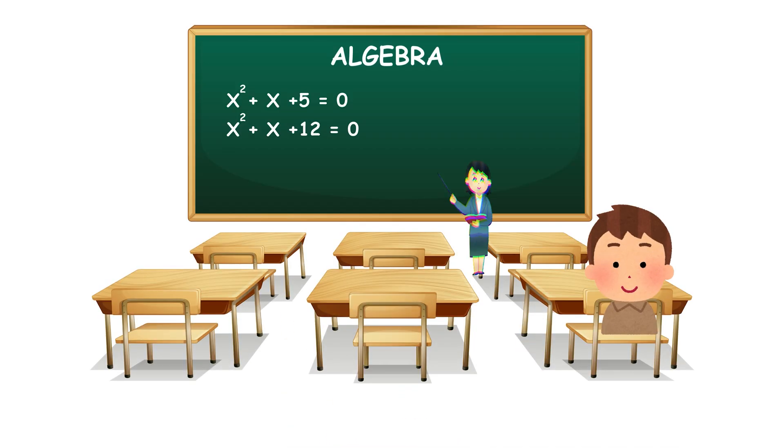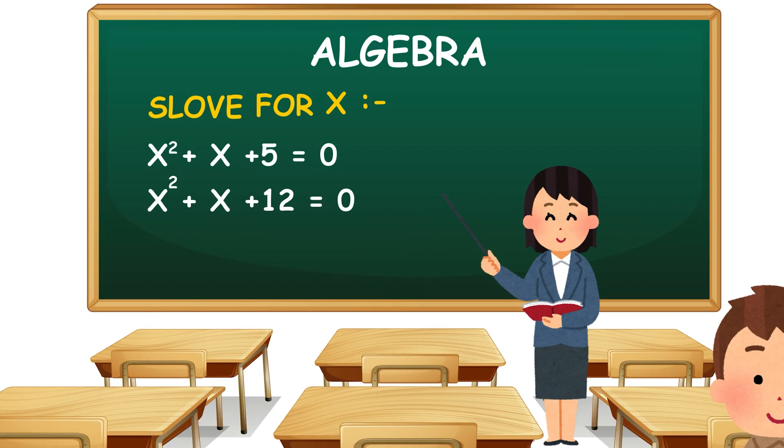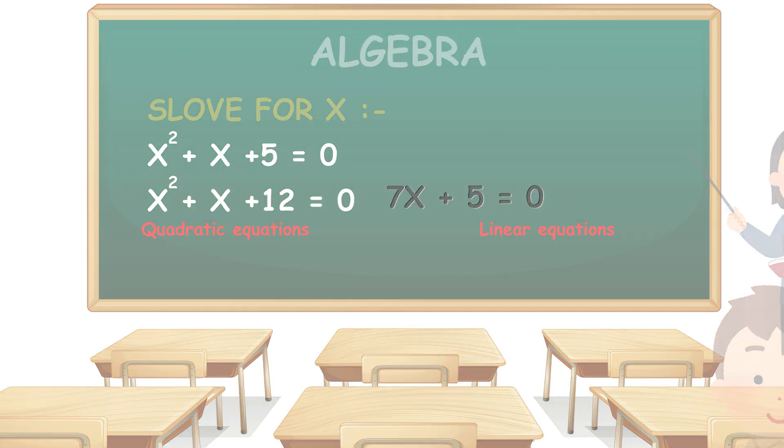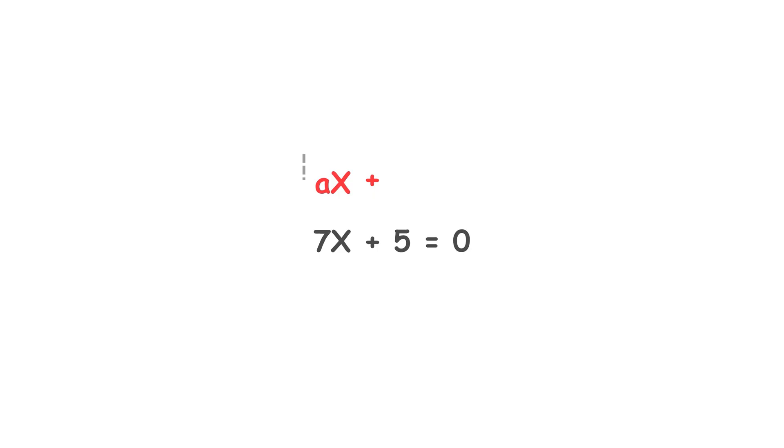If you've ever taken an algebra class, you've probably been asked to solve for x. Before you get to quadratic equations, you usually start with linear equations, which are equations that can be put in the form ax plus b equals 0, for a not equal to 0.